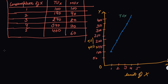Now let's plot the marginal utility. At 1 unit, you get 100 utils. At 2 units, you get 90 — somewhere here. At 3 units, you get 80 — somewhere here. At 4 units, you get 70. At 5 units, you get 60. So this is your marginal utility graph. I hope you have understood how to plot the graph of total utility and marginal utility.